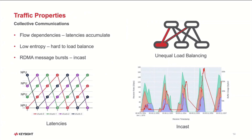First, there are flow dependencies — you have to complete the first transfer to an intermediate GPU before that GPU can continue. So if you have any latencies in the network, they accumulate. Second, all these data transfers are all the same — same number of packets, same packet size, coming at approximately the same periods of time, using the same protocols. For the network, it's really hard to load balance them because they all look the same. This causes congestion between the leaf layer and the spine layer where you don't have enough capacity over a single link and need to spread the load.